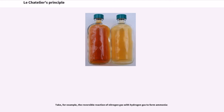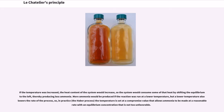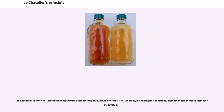Take, for example, the reversible reaction of nitrogen gas with hydrogen gas to form ammonia. Because this reaction is exothermic, it produces heat. If the temperature is increased, the heat content of the system increases, so the system shifts the equilibrium to the left, thereby producing less ammonia. More ammonia would be produced at a lower temperature, but a lower temperature also lowers the rate of the process. In practice, the Haber process sets the temperature at a compromise value that allows ammonia to be made at a reasonable rate with a not-too-unfavorable equilibrium concentration. In exothermic reactions, an increase in temperature decreases the equilibrium constant K; whereas in endothermic reactions, an increase in temperature increases K.